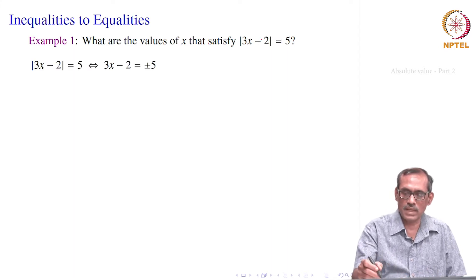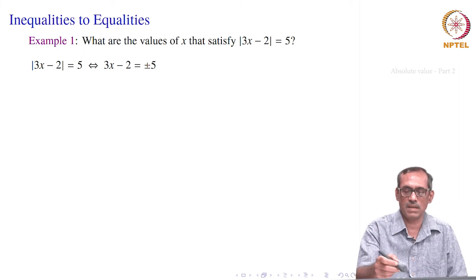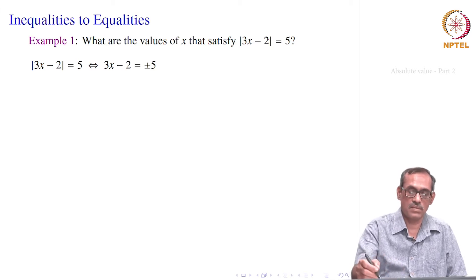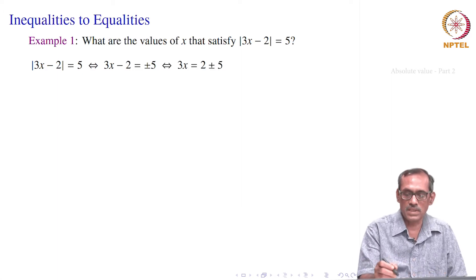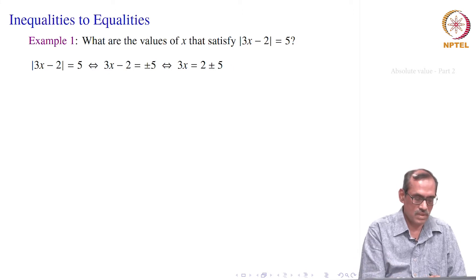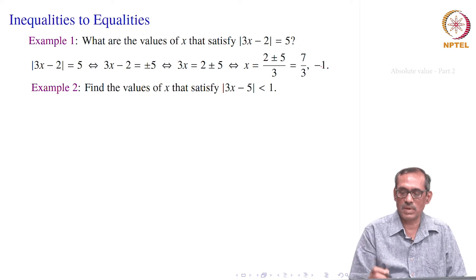We know that modulus means either it equals that or it equals minus of that. So 3x - 2 can be either equal to 5 or equal to -5. Instead of a quadratic, we get two linear equations. So 3x = 2 + 5 = 7, giving x = 7/3, or 3x = 2 - 5 = -3, giving x = -1.